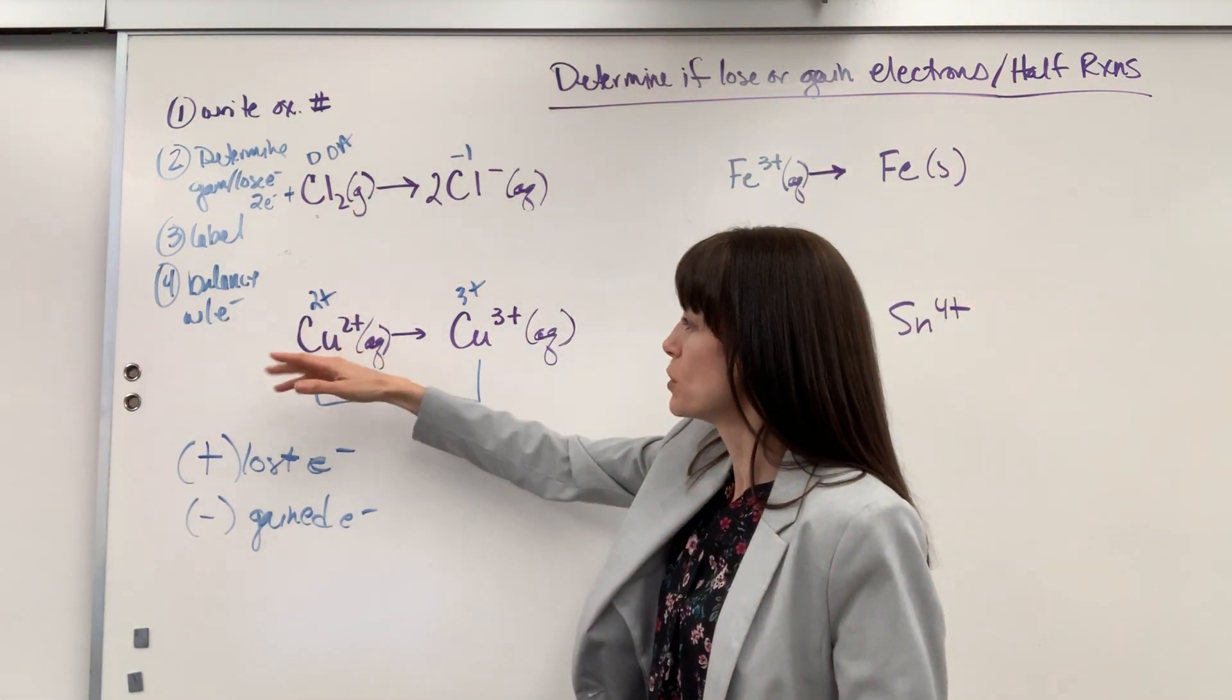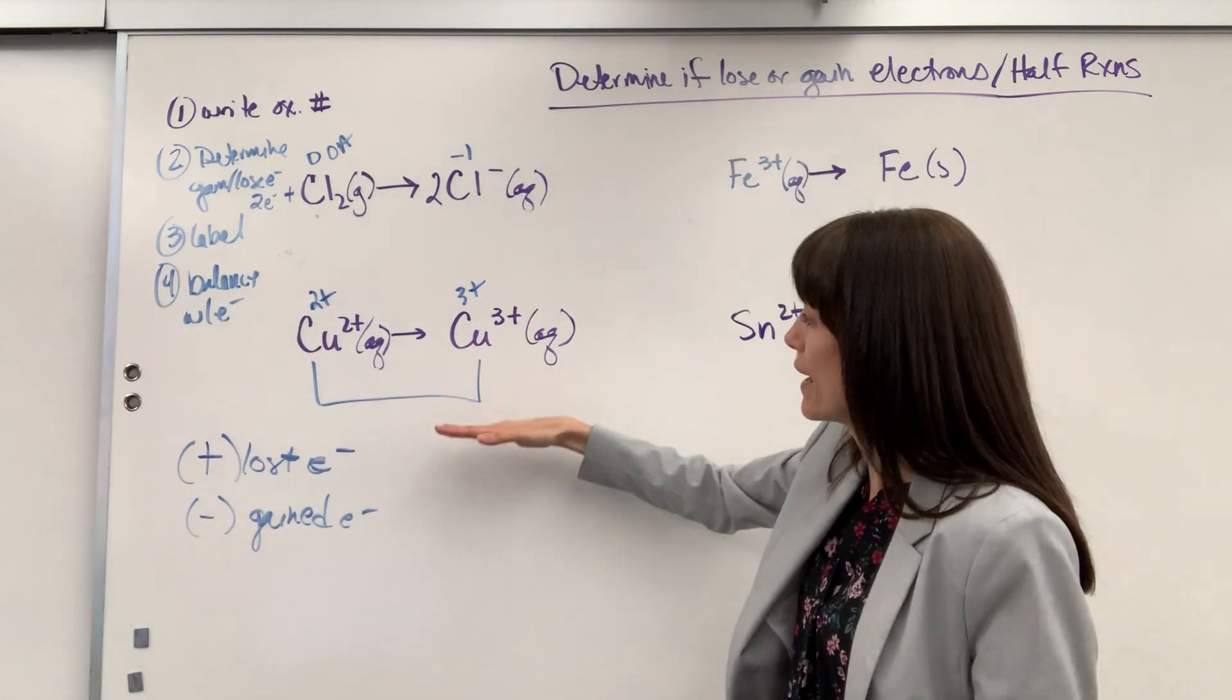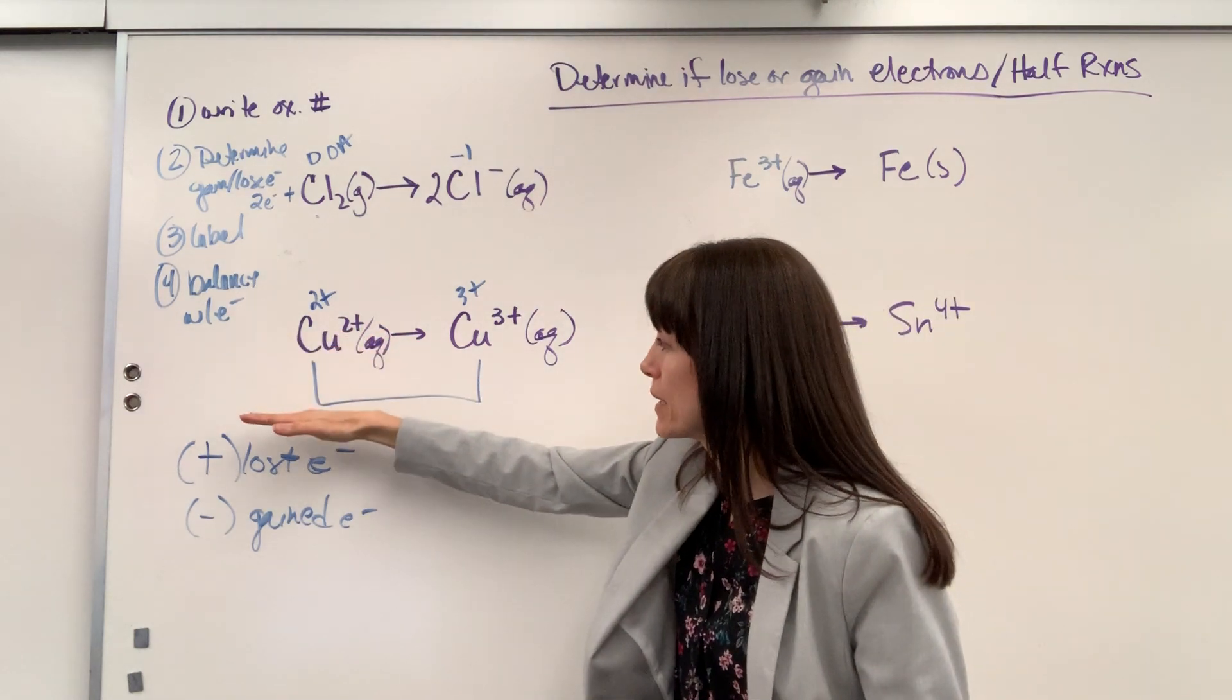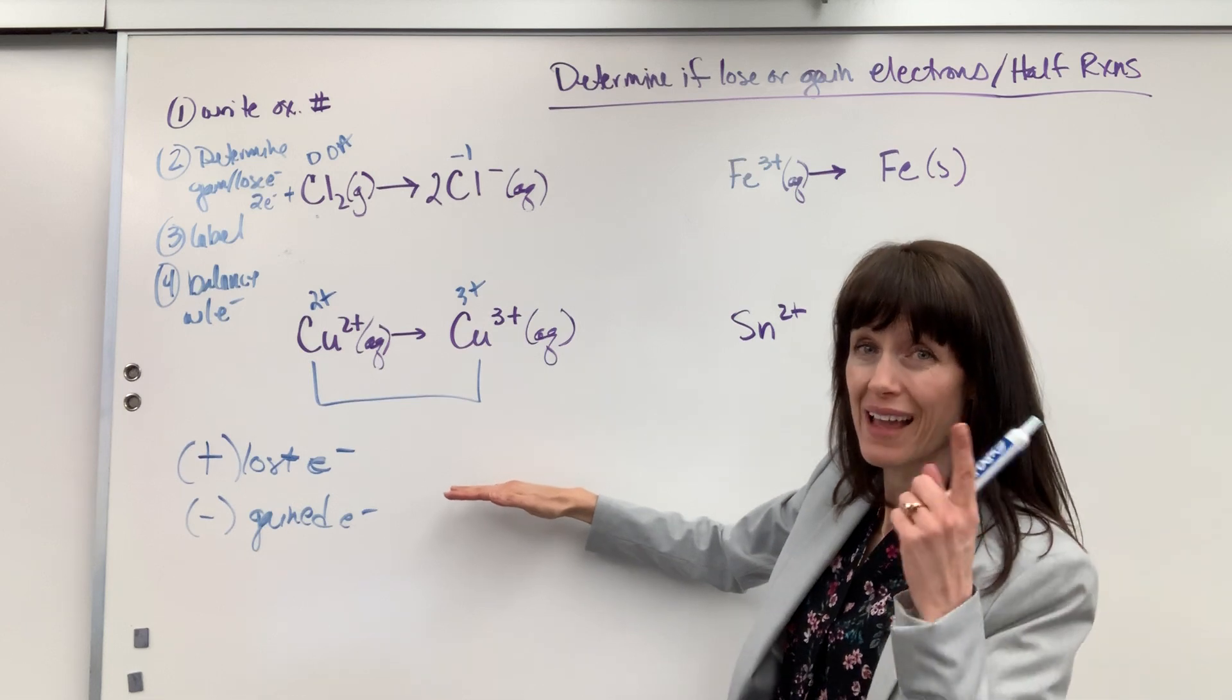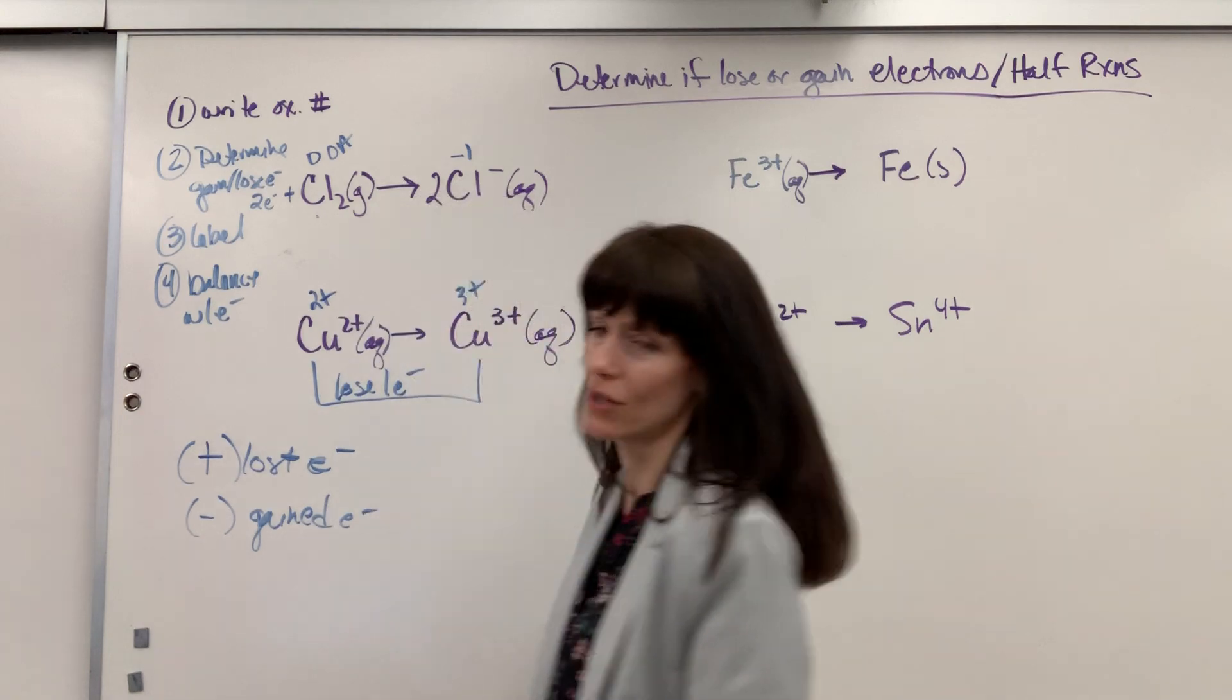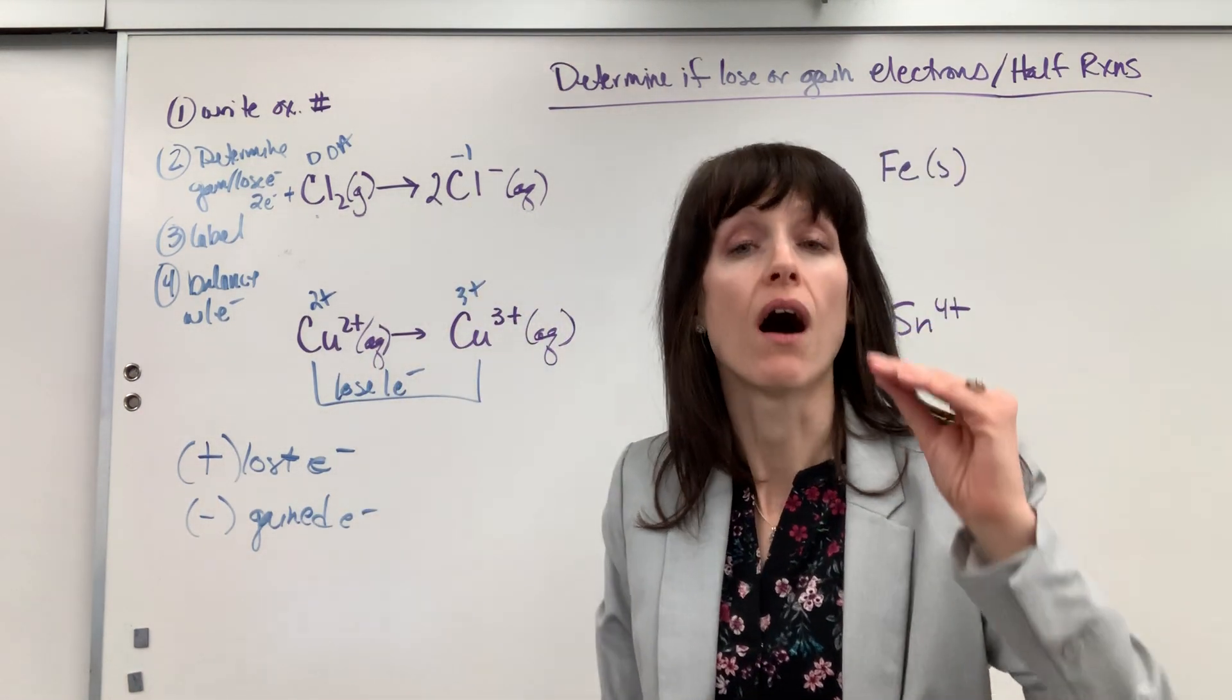So here on the two plus, if this is my zero, we're down by two electrons. Over here, I'm down by three. One, two, three. So I'm going from down by two to down by three. How many electrons did we lose? I lost one. So we're going to lose one electron. And then I go to my saying, Leo, lose electrons oxidation.